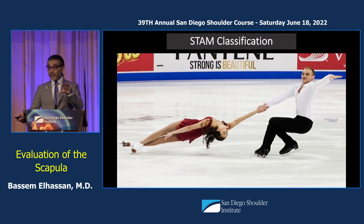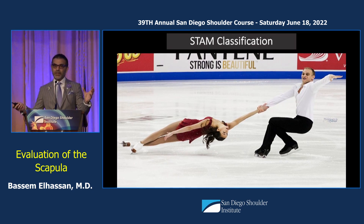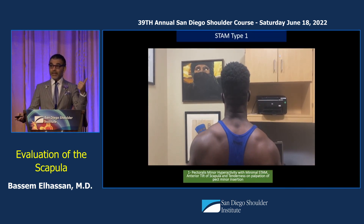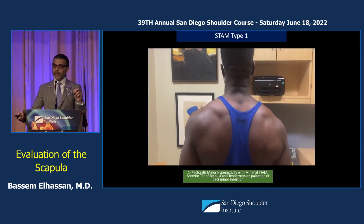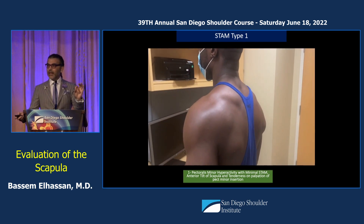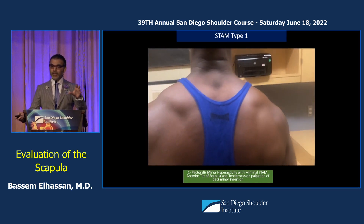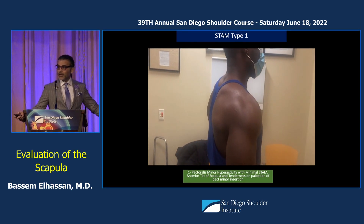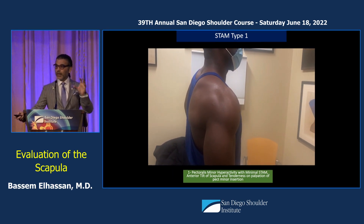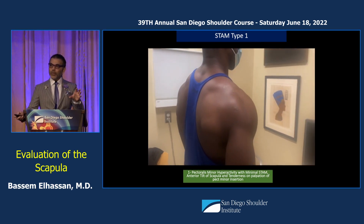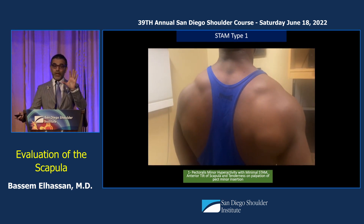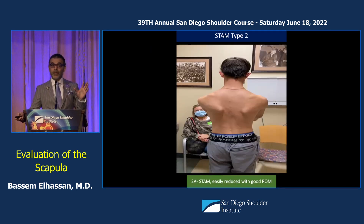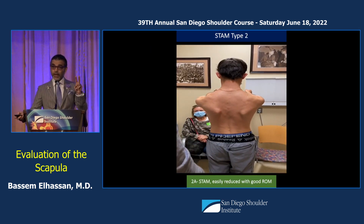We came up with a STEM classification that encases 95% of everything about scapulothoracic abnormality. STEM 1 is when you have pect minor hyperactivity with minimal STEM — the patient has anterior tilt with hyperactivation of the upper trapezius and some limitation of motion. A simple pectoral spine release will help without addressing the scapula itself. STEM number 2 has two types: 2A and 2B.